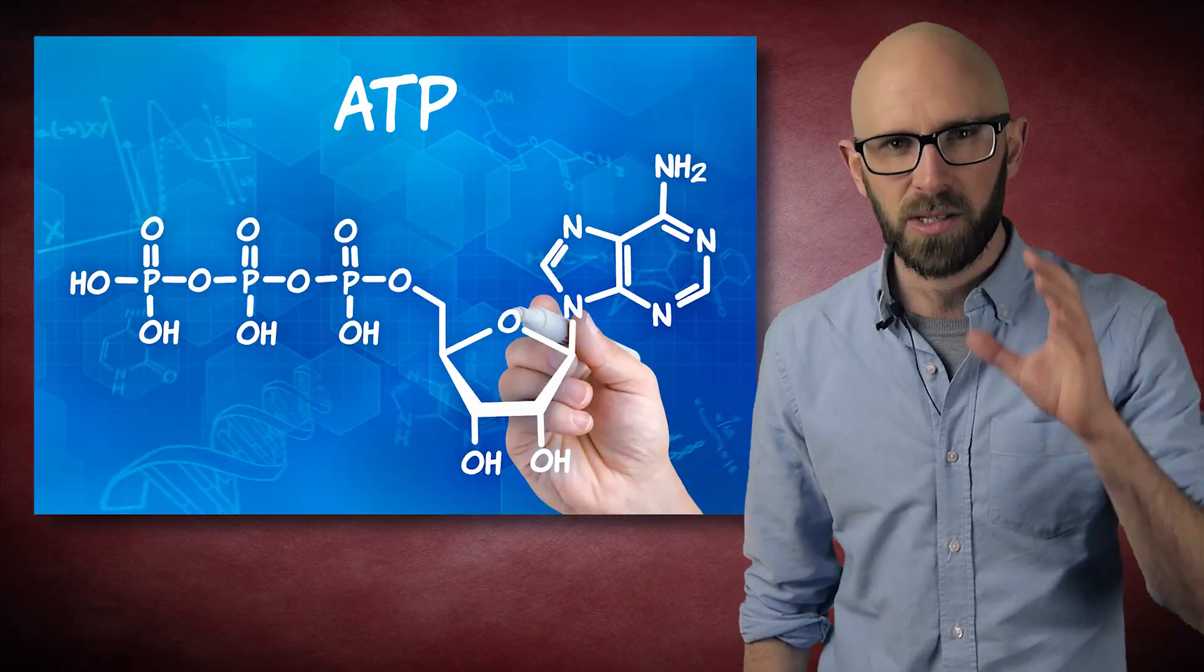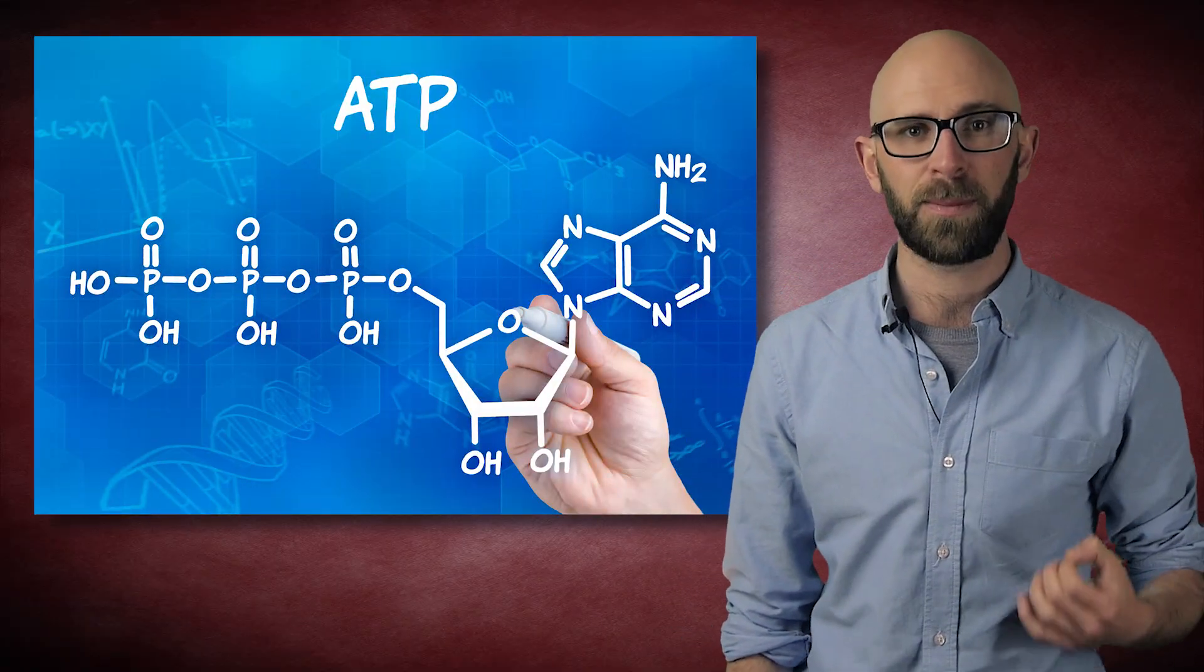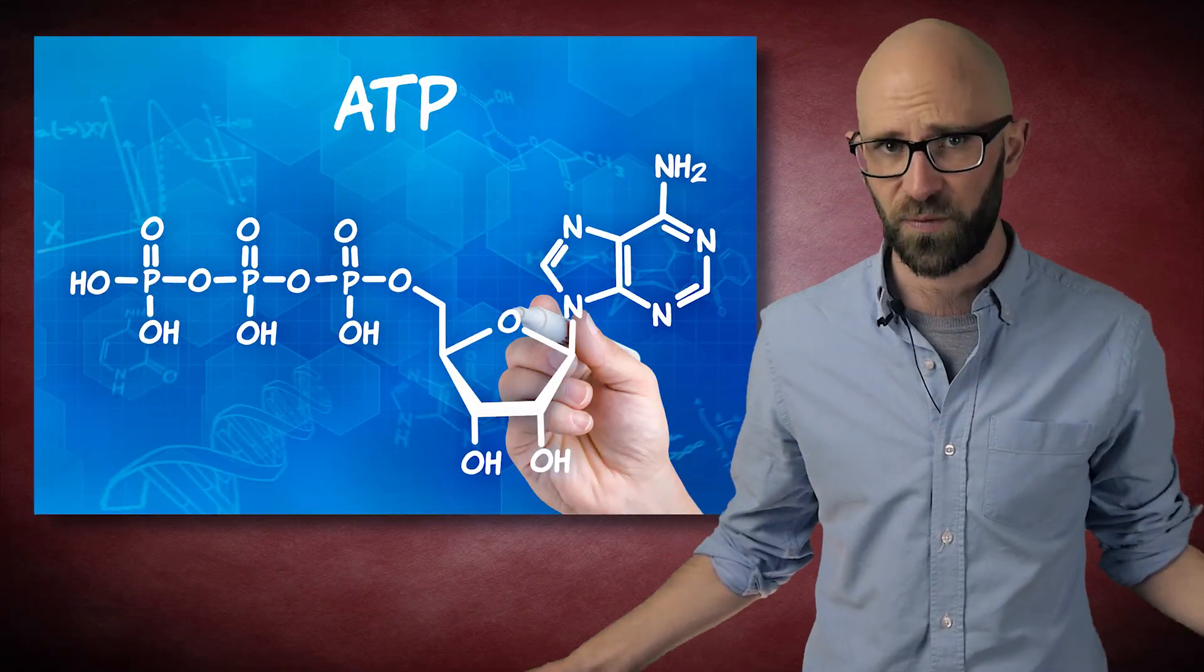Mitochondria are a type of organelle found in almost all complex cells. They are known as the power plants of the cell because they supply an enzyme, more accurately a coenzyme, known as adenosine triphosphate. This ATP is the source for the chemical energy needed by a cell to perform a wide range of functions.